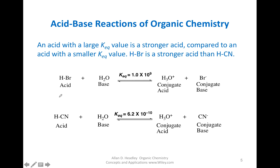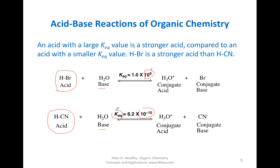Here is HBr, hydrobromic acid, and HCN, measured in water. The equilibrium constant for HBr is 10 to the 9 — a very large number — and for HCN it is 10 to the negative 10, a small number. So this is telling us that HBr is a strong acid and HCN is a weak acid based on these equilibrium values.